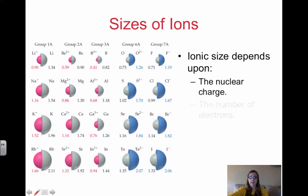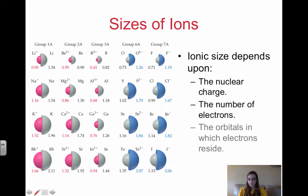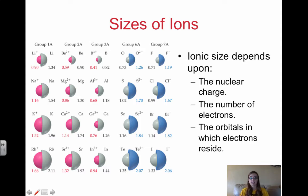Next we're going to look at ionic radii. When we focus on ionic size, it depends upon a few things: the nuclear charge, the number of electrons, and the orbitals that the electrons are in. Ionic radius is the distance from the nucleus to the outer edge of the electron cloud, but within a charged ion instead of a neutral atom. The same radii trends do apply once you divide the table into metals and non-metals.